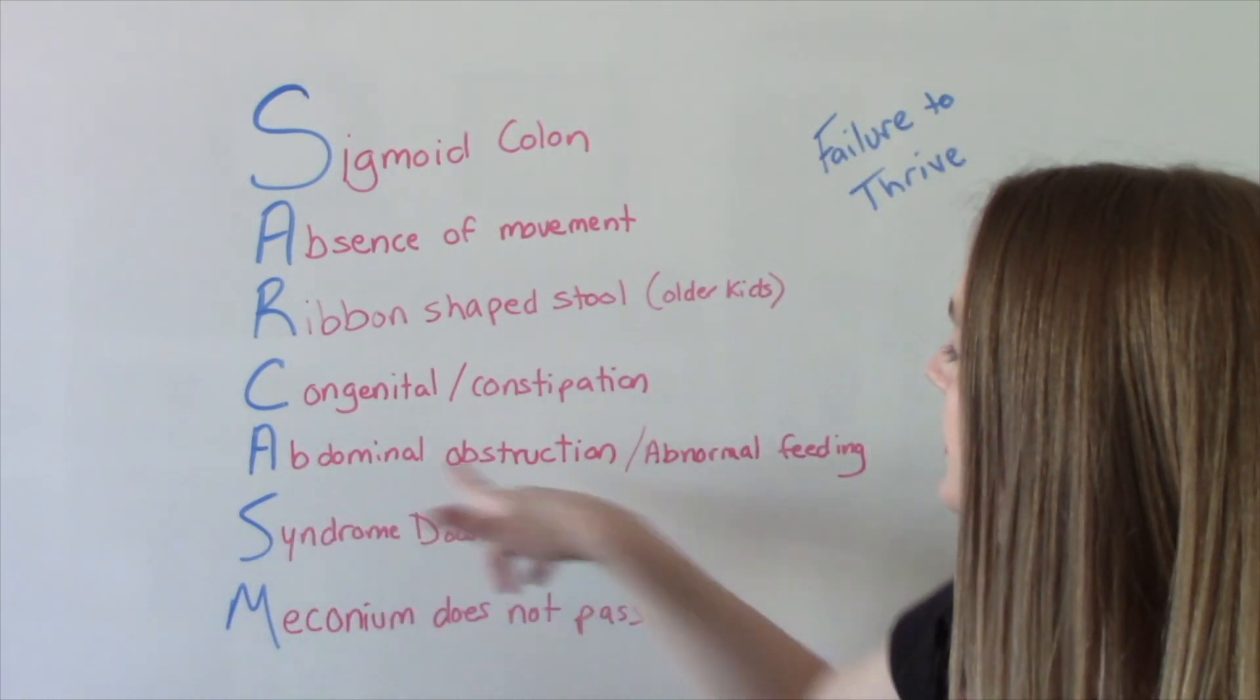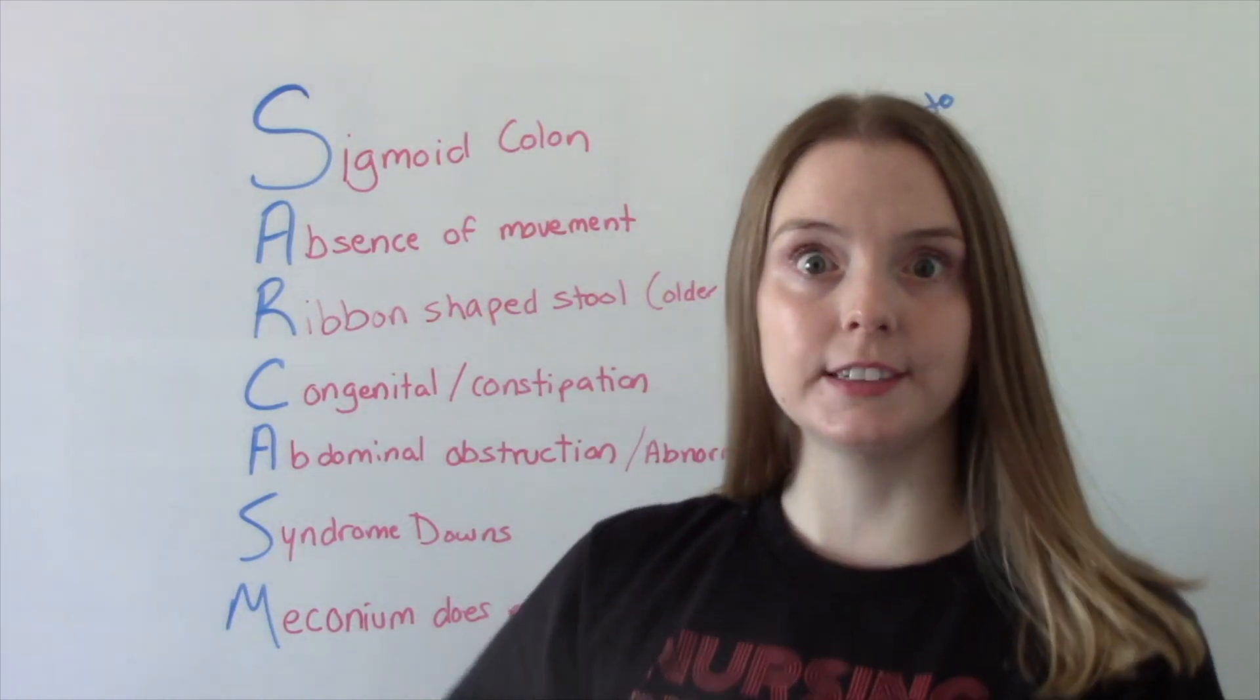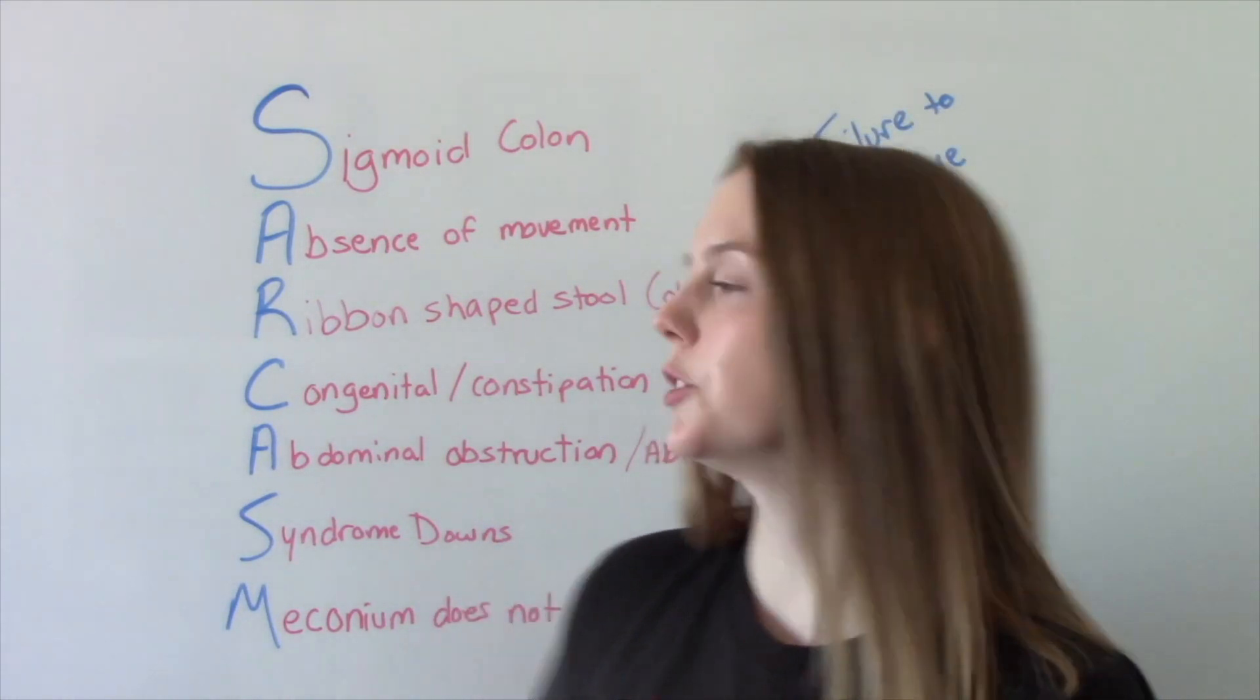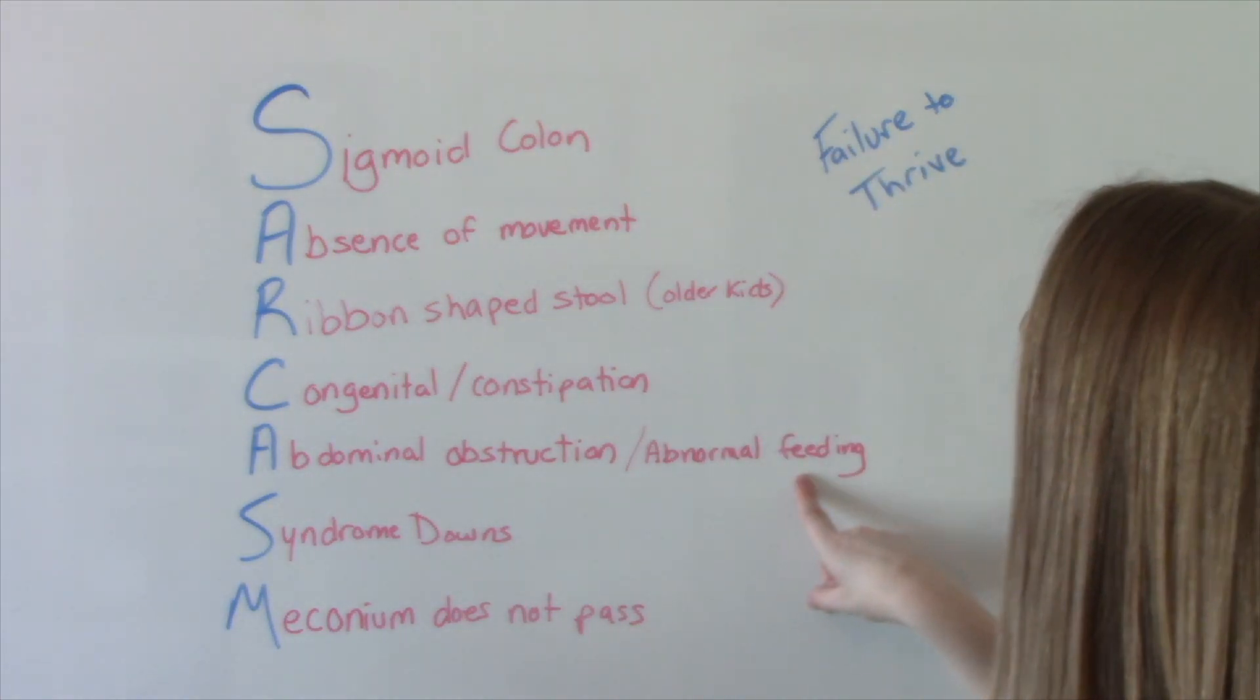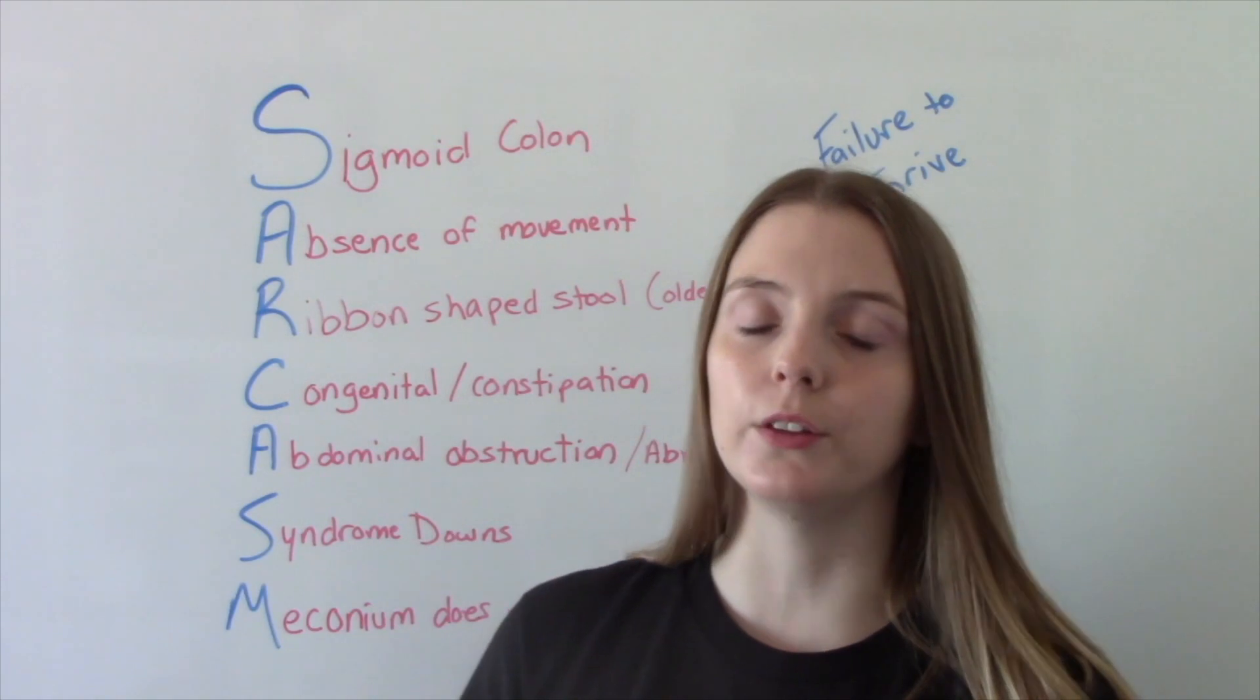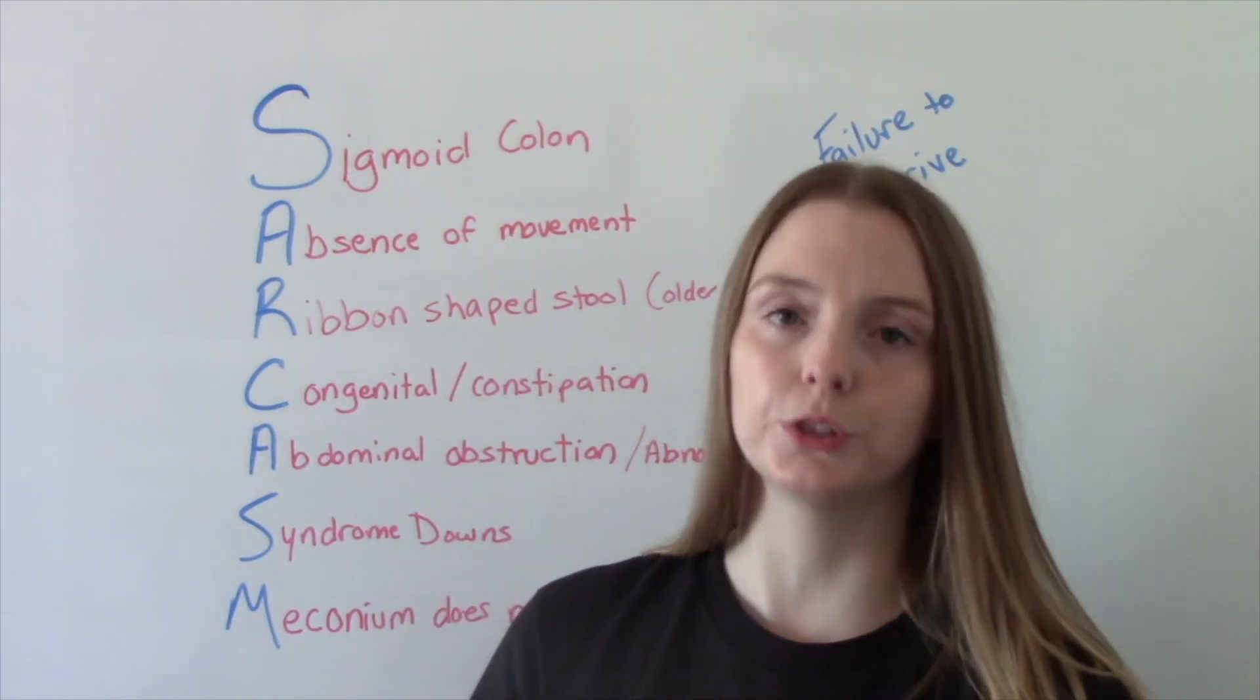A is for abdominal obstruction or abdominal distension because the stool is not moving through the bowel like it's supposed to. And abnormal feeding, so poor feeding. They're not eating well. The newborn can't eat very well. They're not interested in eating.